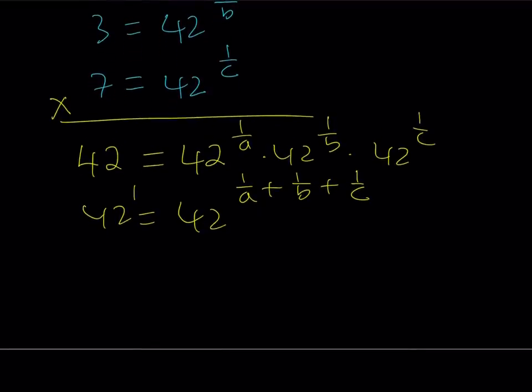Obviously, 42 can be written as 42 to the power 1. So from here, we can safely say that since the bases are equal, the exponents are also equal, which gives us 1 over A plus 1 over B plus 1 over C equals 1.